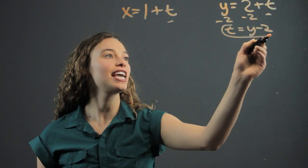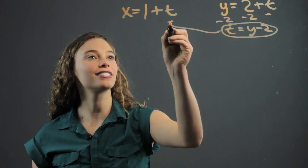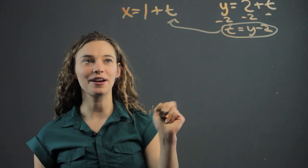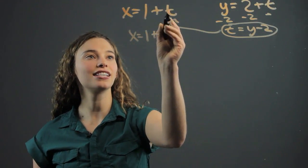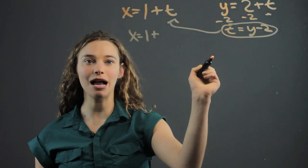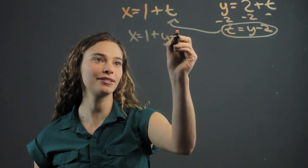So now we're going to take this value for t and plug it into this equation. So we have x equals 1 plus, instead of writing t, we'll write y minus 2 because that's what t equals.